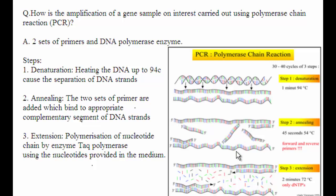The third step is extension. Polymerization of nucleotide chains by the enzyme Taq polymerase using the nucleotides provided in the medium. You can see in the figure the third step, the extension step.